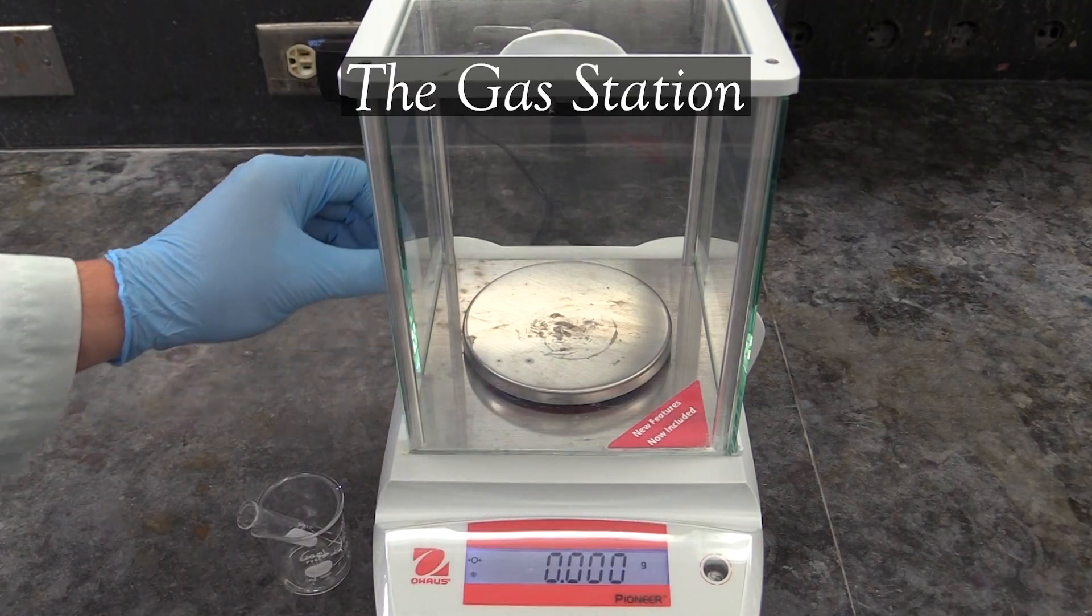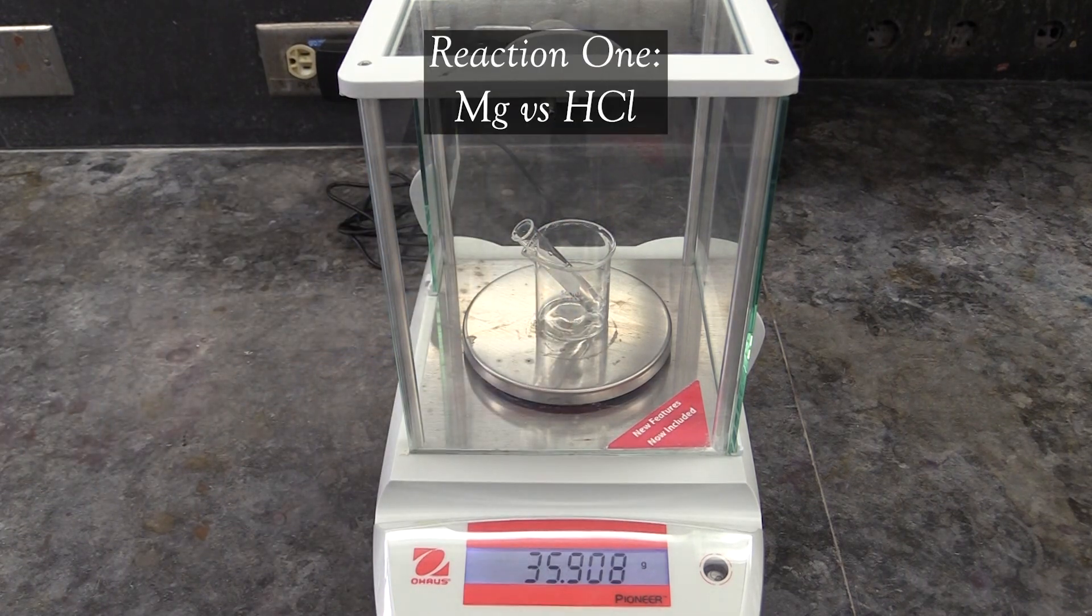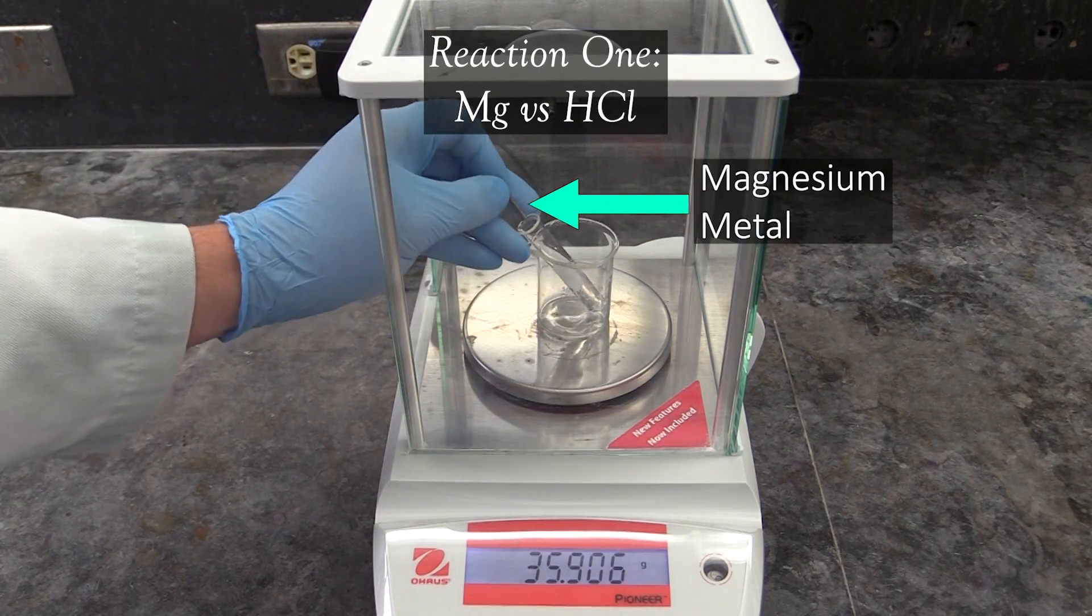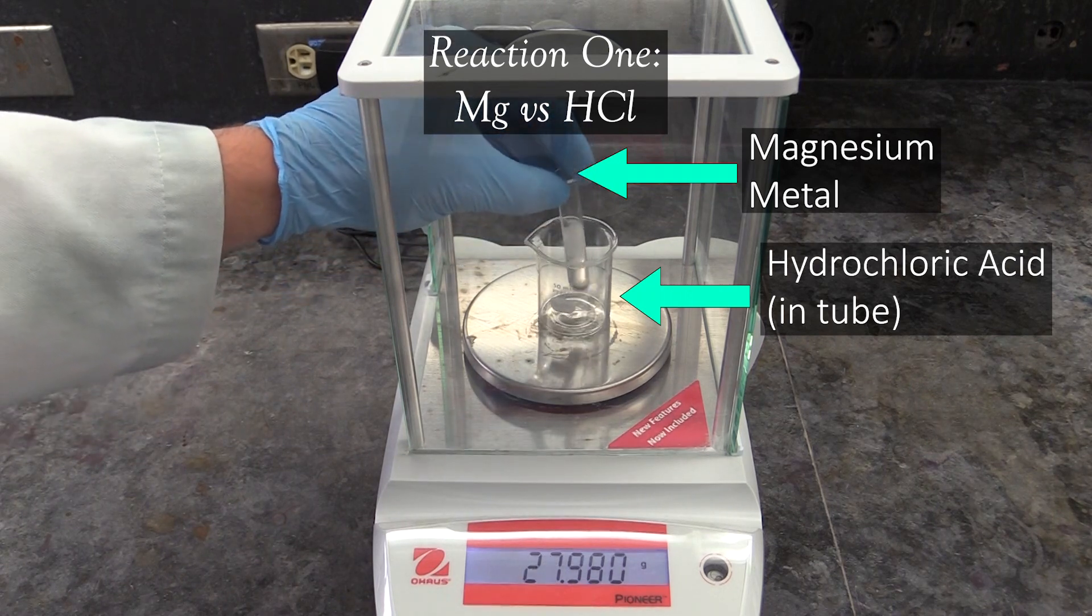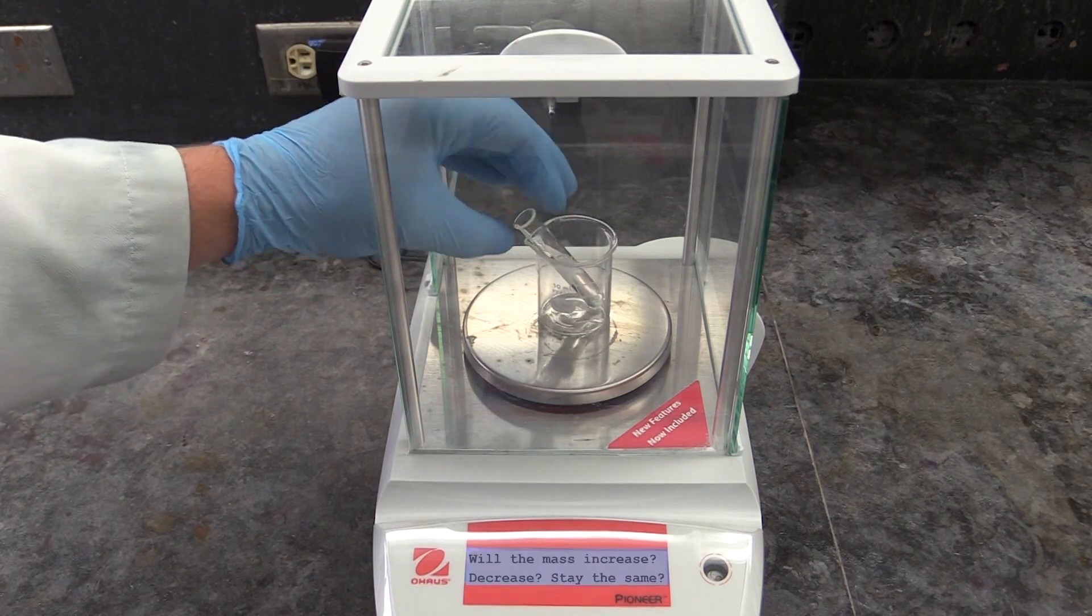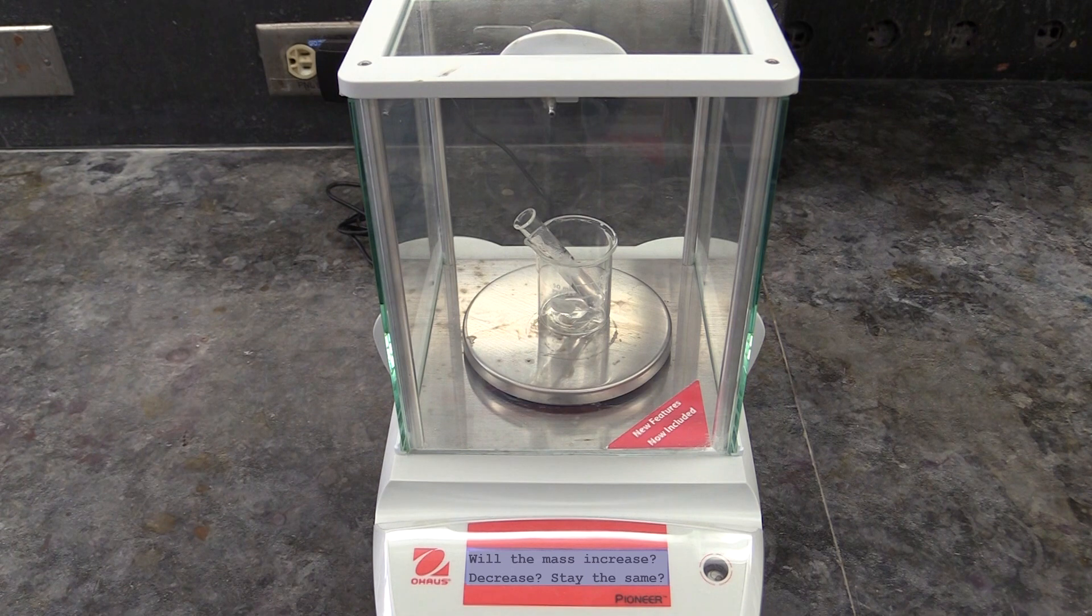And at last, we come to the fifth part of your experiment, which involves two gas-forming reactions. For the first reaction, you will react magnesium metal with hydrochloric acid. You'll do this on a balance so you can monitor the reactant's masses as it proceeds. Of course, for this to work, you are going to need your reagent's masses before you initiate the reaction. Keep that in mind when you go to collect your data.